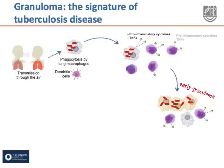These initial steps form the early granuloma, which consists of an amorphous mass of cells. During this period, there is little restriction to mycobacterial growth and the bacteria grow exponentially. TB also infects dendritic cells, which migrate to the draining lymph nodes to induce an adaptive response.